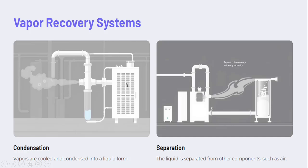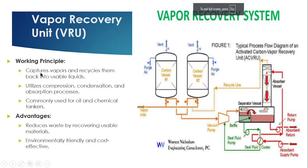What is the vapor recovery system? The vapor recovery system uses two processes: condensation and separation. In condensation, we condense the volatile organic compound into liquid form. After that we separate the liquid from other components such as carbon dioxide or water, and we reuse that volatile organic compound. Basically, in the vapor recovery system we capture the vapor and recycle it into usable liquid using the process of compression, condensation, and absorption. It is commonly used for oil tankers and chemical tankers.